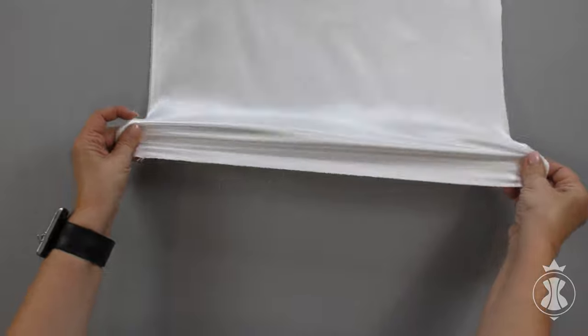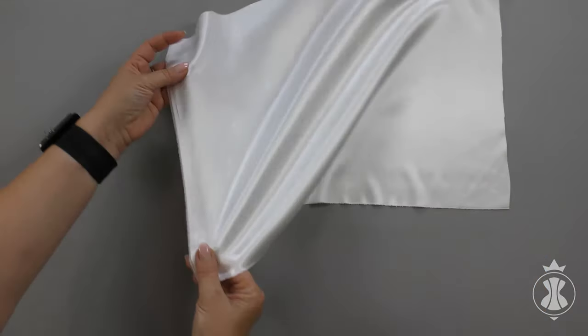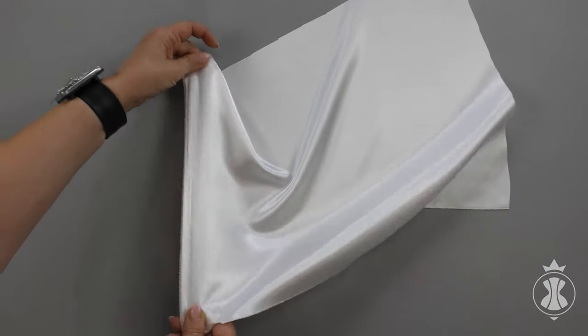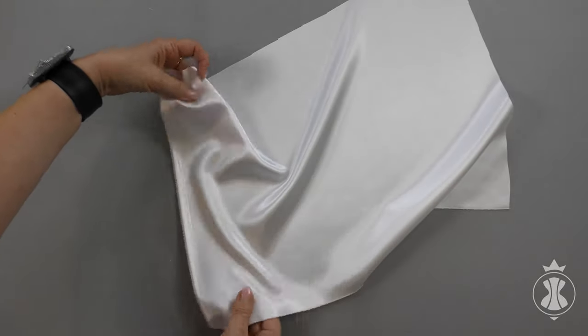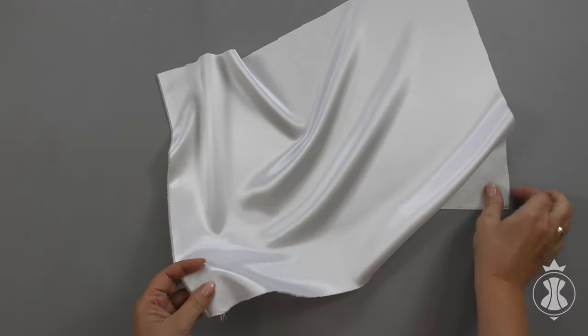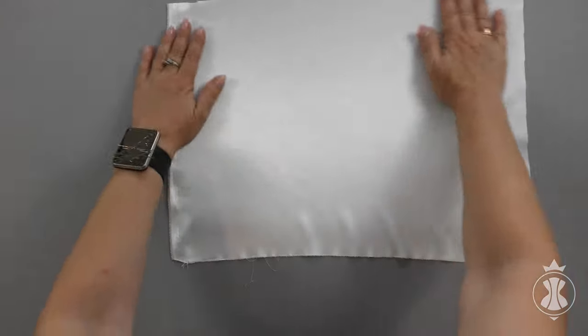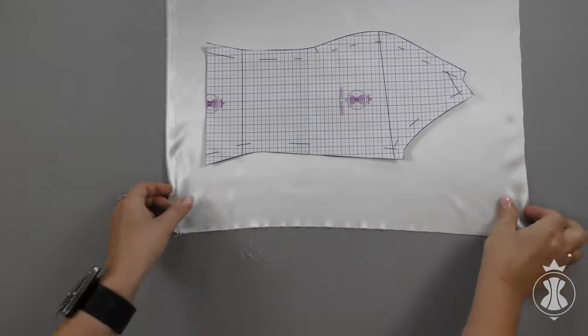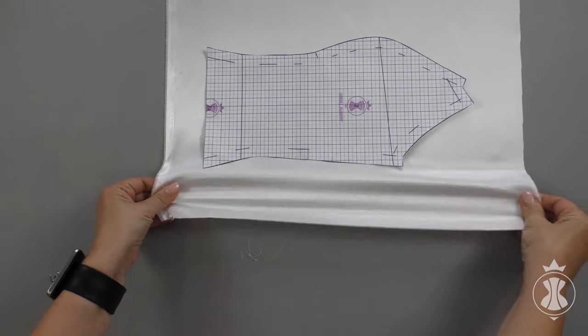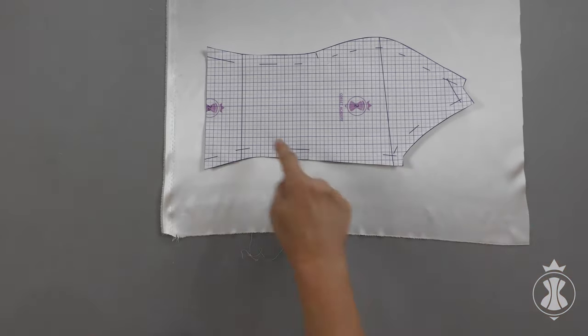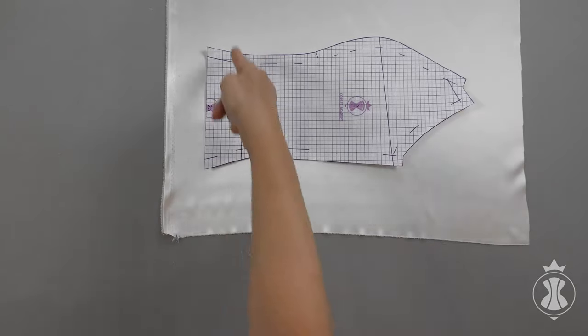Sometimes, we can use fabrics with lycra as the outer layer or its lining. But remember that for corset garments, you should use fabrics which stretch in only one direction. When you arrange patterns on such fabrics, make sure that they stretch only perpendicular to a waistline.